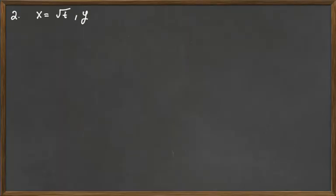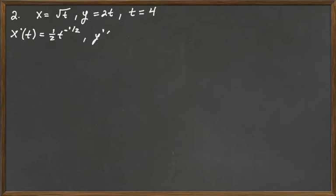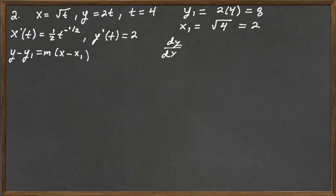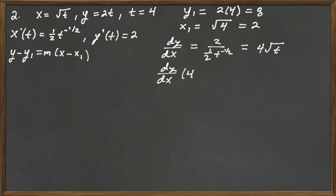For the next example, x equals the square root of t and y equals 2t, and we look at what's happening when t equals 4. So x'(t) = dx/dt = (1/2)t^(-1/2), and y'(t) = dy/dt = 2. To find the tangent line at t = 4: y₁ = 2(4) = 8, x₁ = √4 = 2. The slope dy/dx = 2 over (1/2)t^(-1/2), which simplifies to 4√t. Evaluated at t = 4, that gives 4√4 = 8.